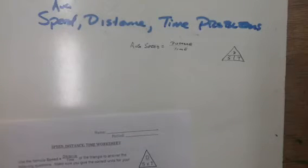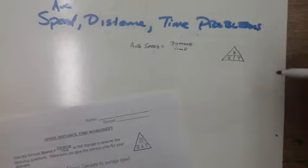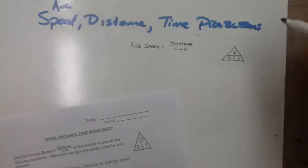This video is going to show examples of how to do average speed, distance, and time problems. These problems have three variables. So if you're given two of the variables, you should be able to figure out the third.